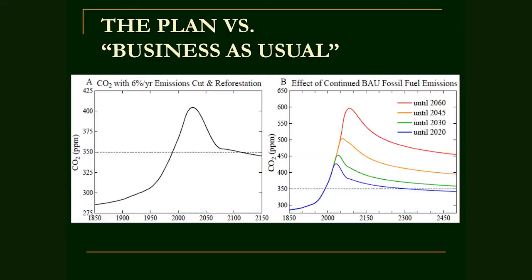In pre-industrial times we were at 280 parts per million carbon dioxide in the atmosphere. Carbon dioxide, along with methane, are some of the important greenhouse gases. At 350 parts per million, that's the level where more heat will be absorbed by the Earth than reflected back, and at that point the Earth will get progressively warmer and warmer. So the limit we never want to cross is 350 parts per million. Unfortunately, we're at 410 parts per million, and that's an extremely serious and scary situation — it's not sustainable.